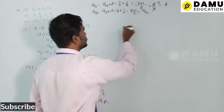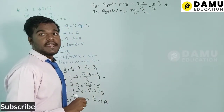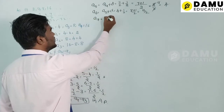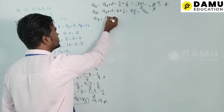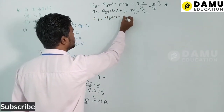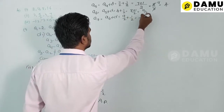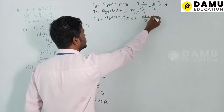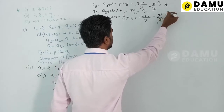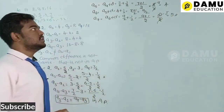Then a7 = a6 + d = 9/2 + 1/2. Taking LCM 2: (9 + 1)/2 = 10/2 = 5. So a7 = 5. These are the three more terms.